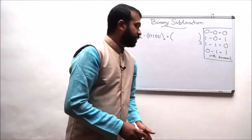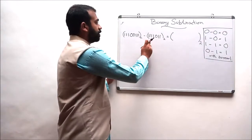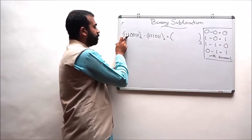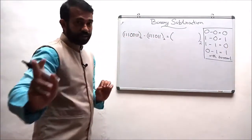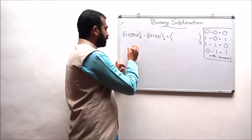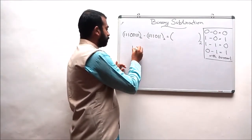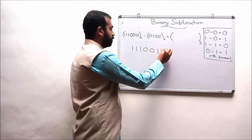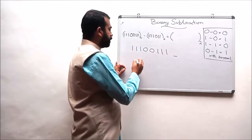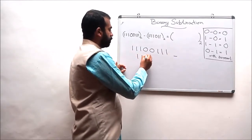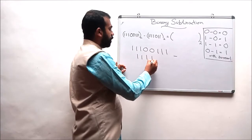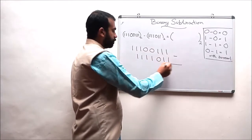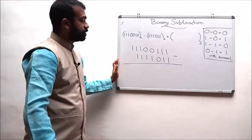Our third example is to subtract 1-1-1-1-0-1-1 from 1-1-1-0-0-1-1-1. We write the greater number 1-1-1-0-0-1-1-1 and subtract 1-1-1-1-0-1-1. We start from the LSB position.